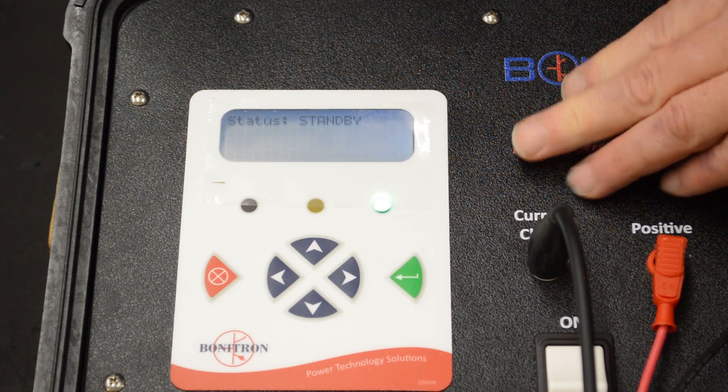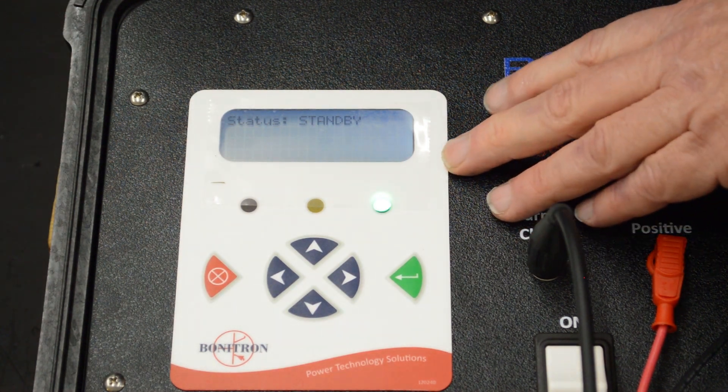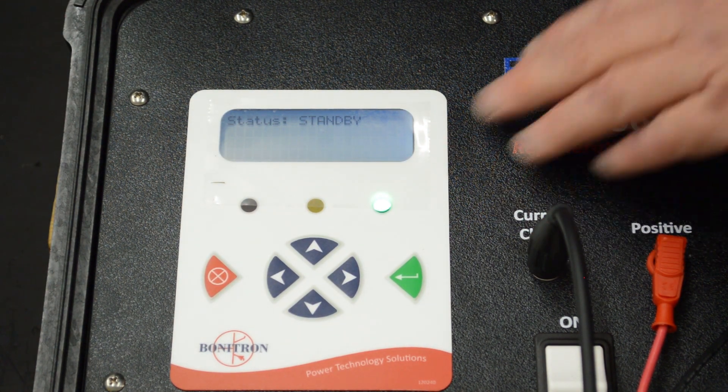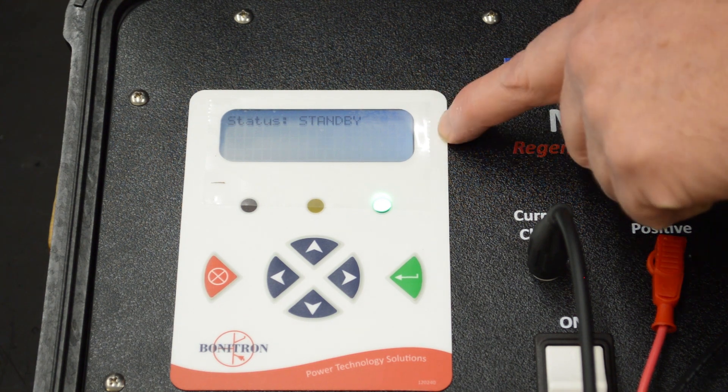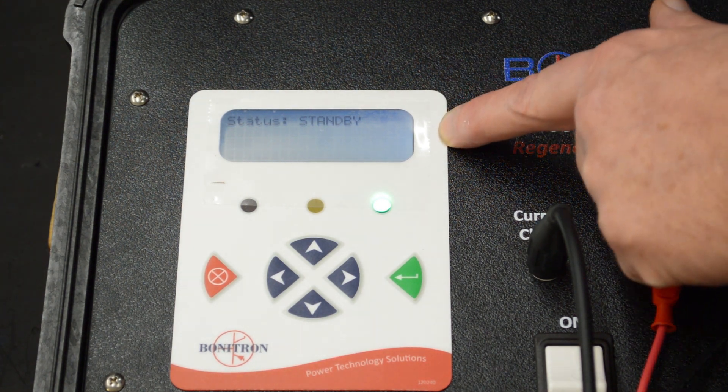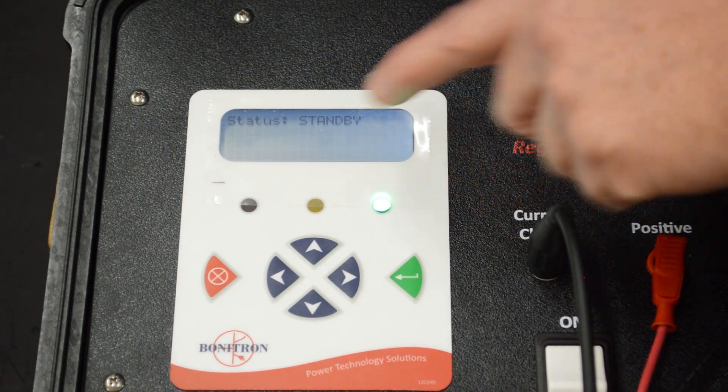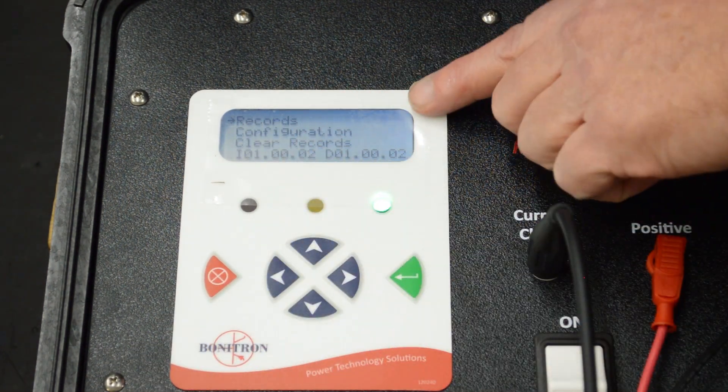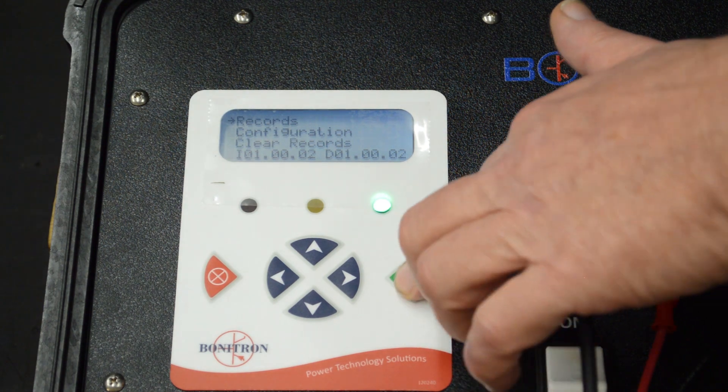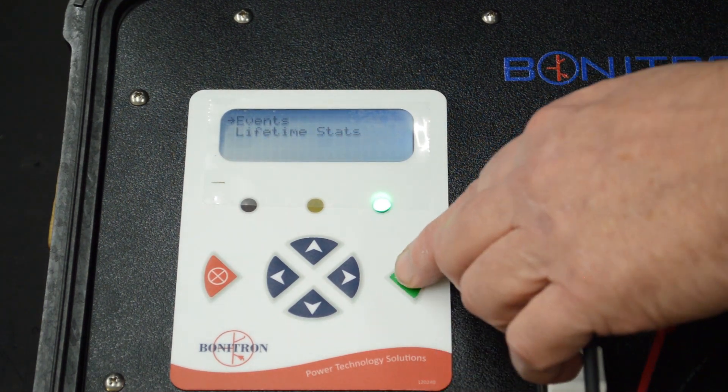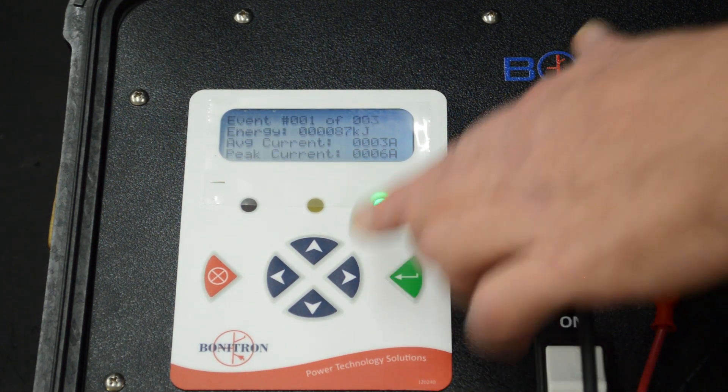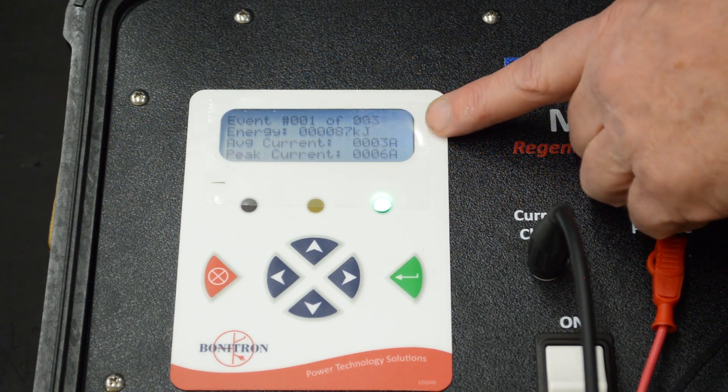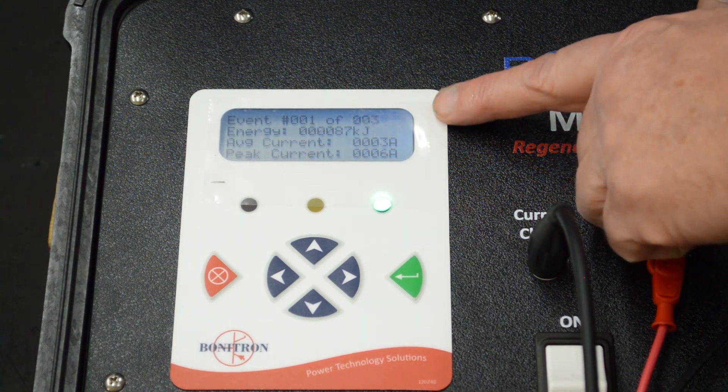Now we're going to actually look at the regen event we just recorded. You start at the power-up menu which shows you status and standby. Then you go to records, which we're already on. You select records, and we're actually going to look at events. And this shows you the parameters for the regen event we just accomplished.